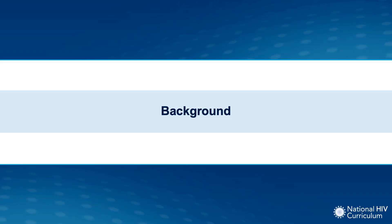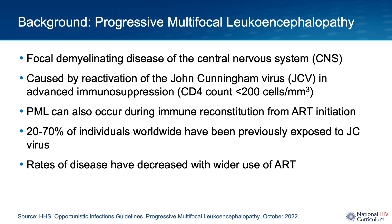PML is an opportunistic infection of the central nervous system. It is a focal demyelinating disease that is caused by the reactivation of the John Cunningham virus, or JC virus, in individuals who have advanced immunosuppression — typically a CD4 count less than 200.